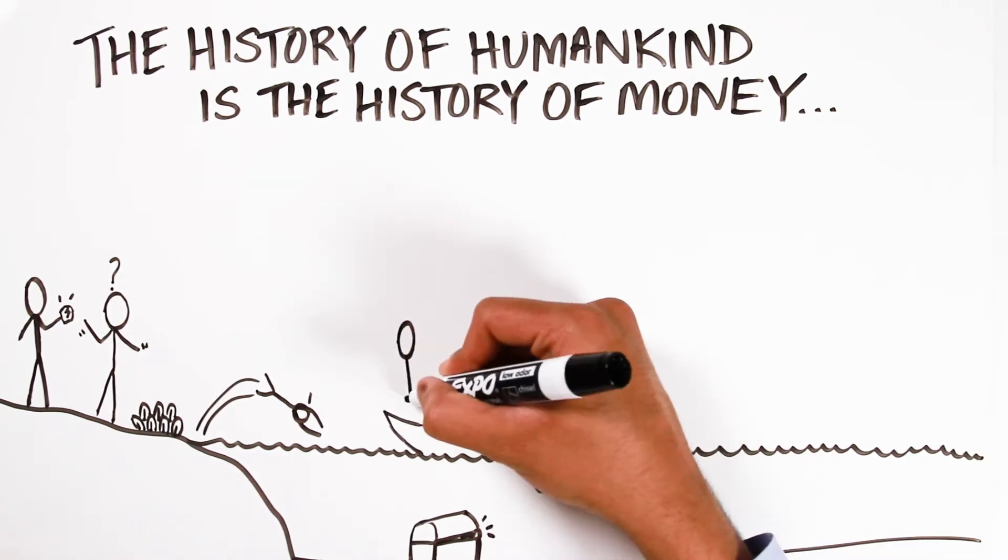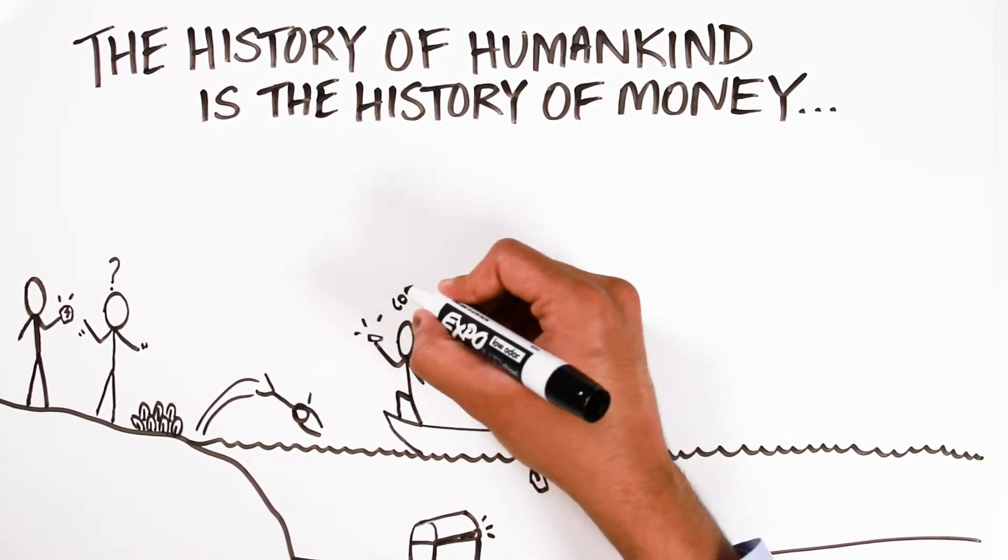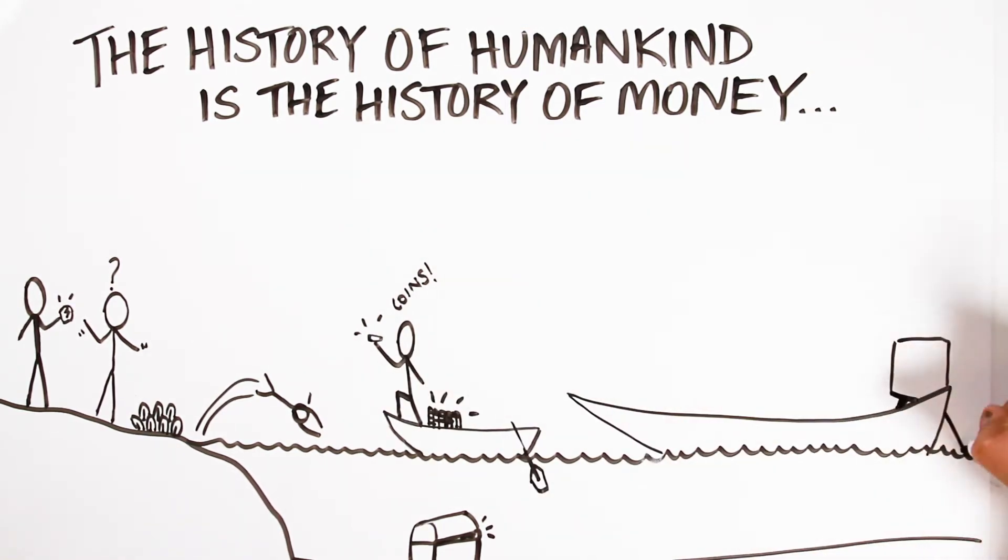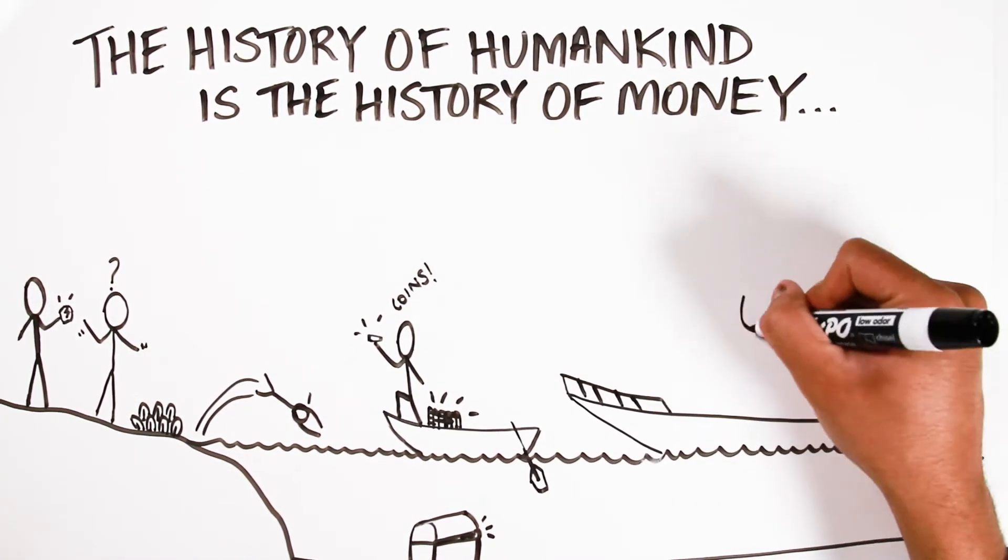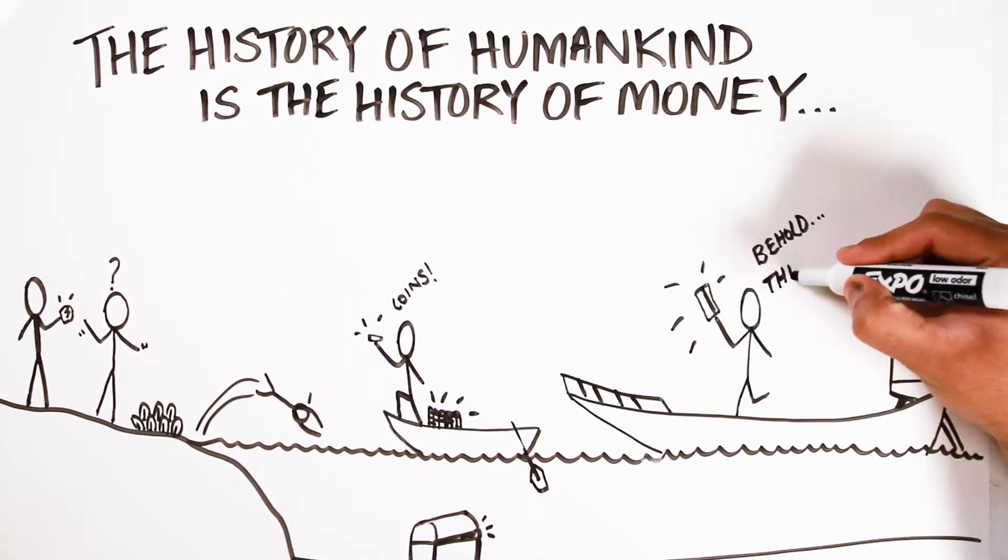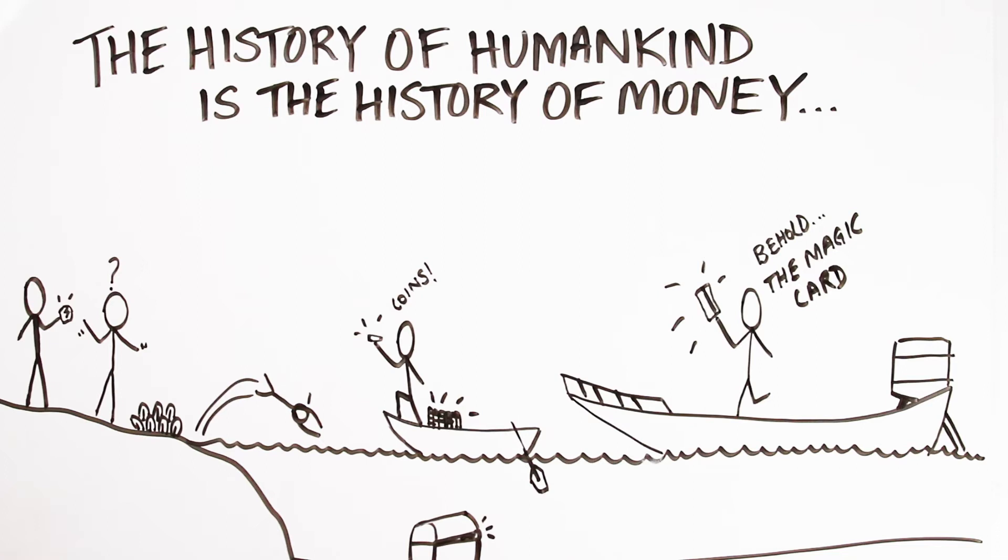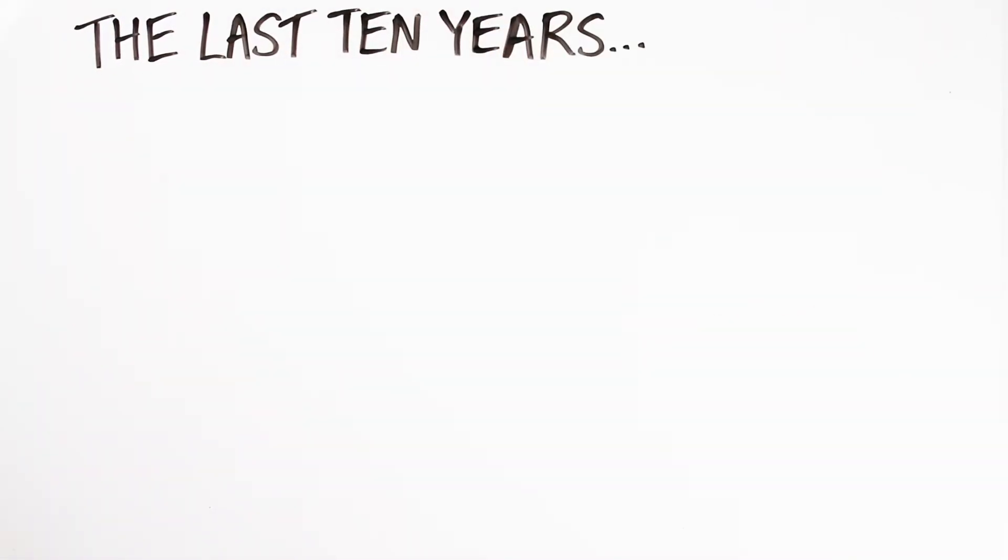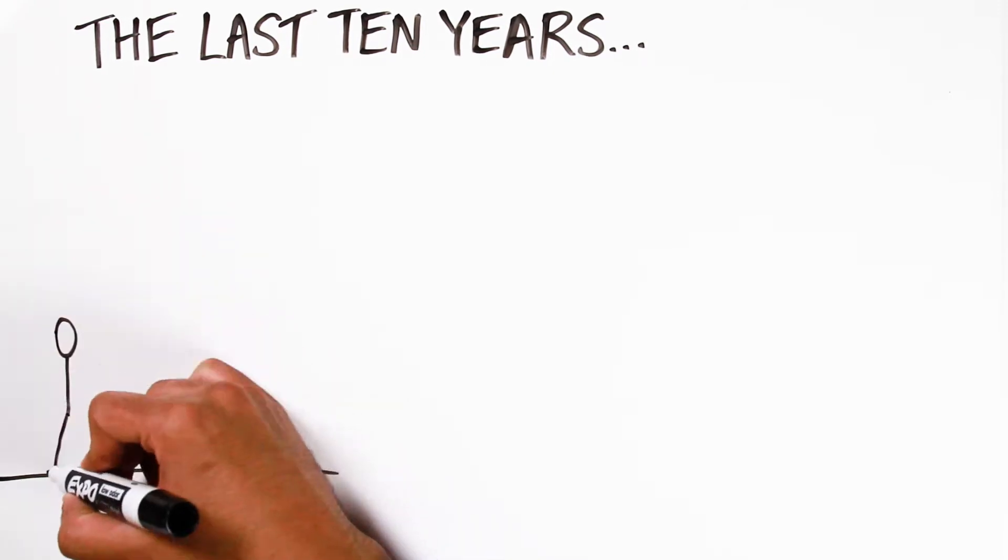But money has never been designed from the top down. Money has always been something that humans stumbled upon in different times and different places. Anything from shells, to gold coins, to later paper money, and bank deposits, and to credit cards today. But none of these forms of money have actually been ideal. They've all had pluses and minuses.